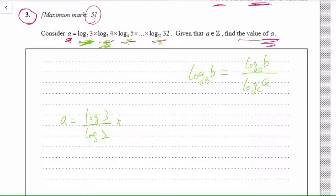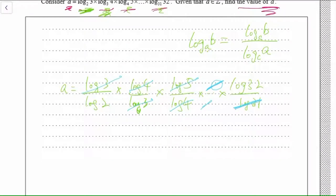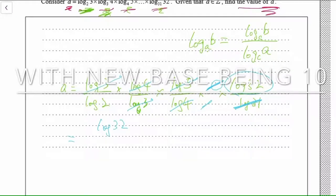So log 3 base 2 becomes log 3 over log 2. Then multiplied by the next one: log 4 over log 3. And the next one: log 5 over log 4. You should be able to see a pattern coming through. The log 3 in the numerator cancels the log 3 in the denominator. The log 4 cancels the log 4. So you expect log 5 to cancel the next term, and so on. At the end, the log 31 from one term cancels the log 31 in the next, so you're left with only log 32 over log 2.